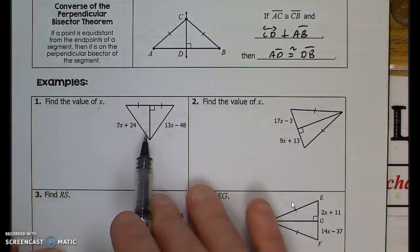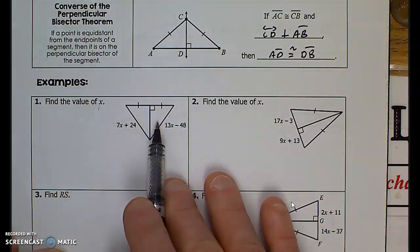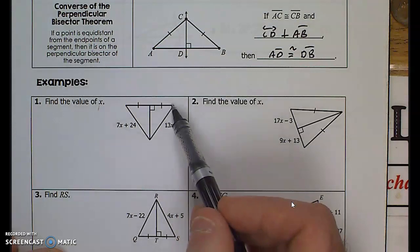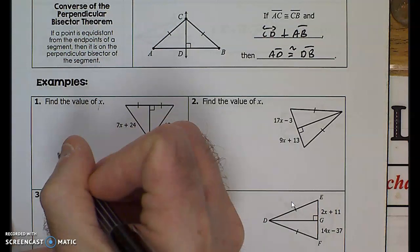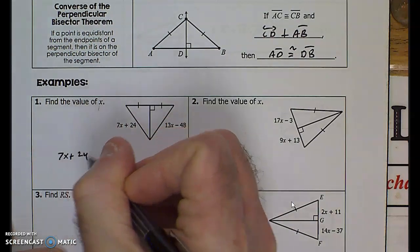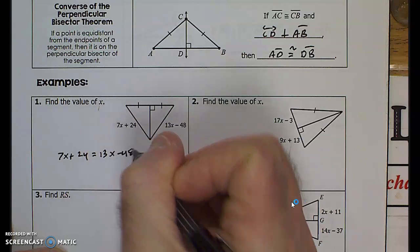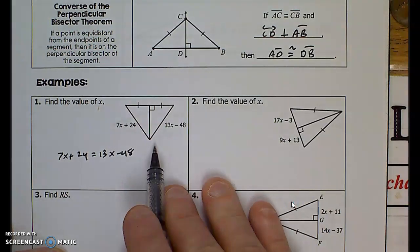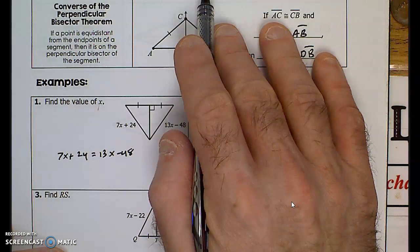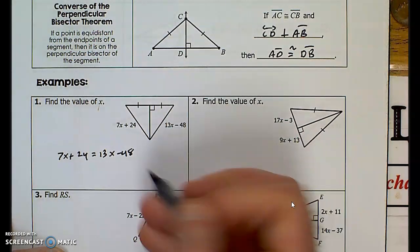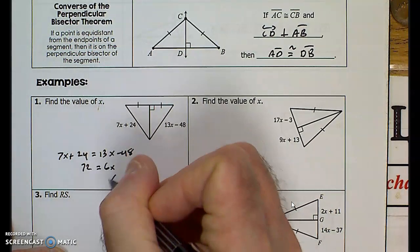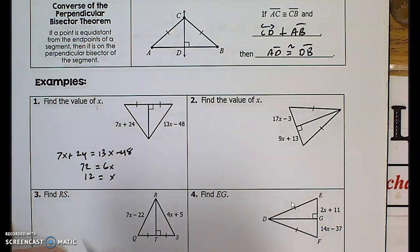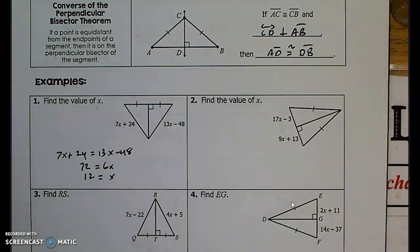Question 1: find the value of x. Looking at these two triangles, they are congruent by the side-angle-side theorem, so corresponding parts will be congruent. I could also use the perpendicular bisector theorem directly. So 7x plus 24 equals 13x minus 48, giving 6x equals 72, so x equals 12.